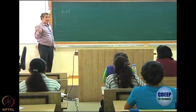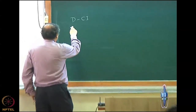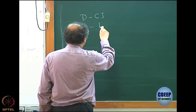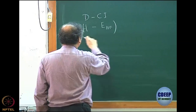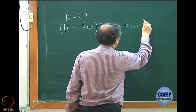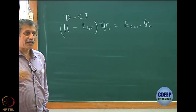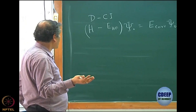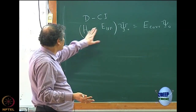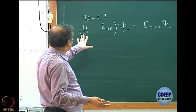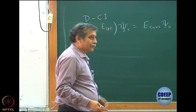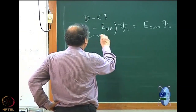Let me restate what we did in the last class. We wanted to write the Schrödinger equation in a somewhat different form, so we write it as (H − E_HartreeFock) ψ₀ = E_correlation ψ₀. This becomes our new Schrödinger equation instead of H ψ₀ = E₀ ψ₀ — we are subtracting E_HartreeFock from both sides. The new operator is basically the original operator minus a scalar number, and in matrix representation only the diagonal part has E_HartreeFock subtracted. This is what we call the normal-ordered H, or H_n.